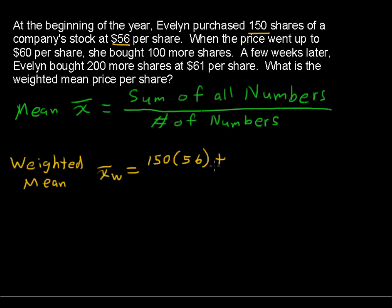But we still have 100 more shares at 60 dollars and 200 more shares at 61 dollars per share. So I could add the number 60 a hundred more times, or I can just say 100 times 60. That's how many times we see the number 60 show up.